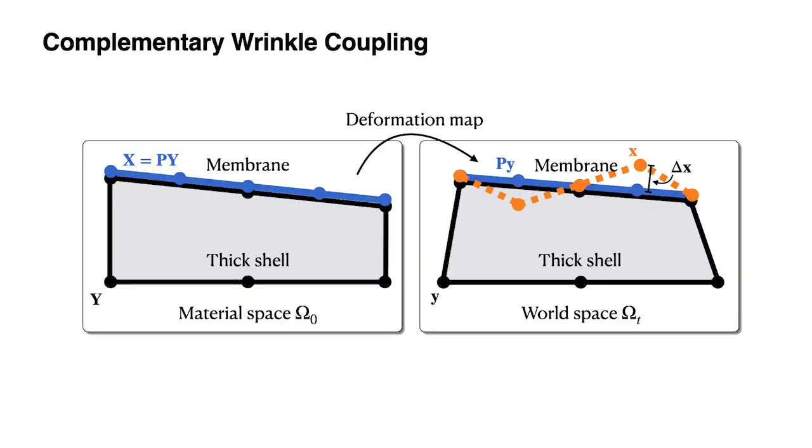To efficiently capture wrinkling details on the coarse thick shell, we subdivide its surface and attach a fine membrane to it. We design a coupling scheme to efficiently compute the attachment.